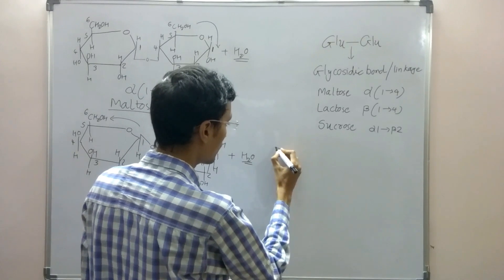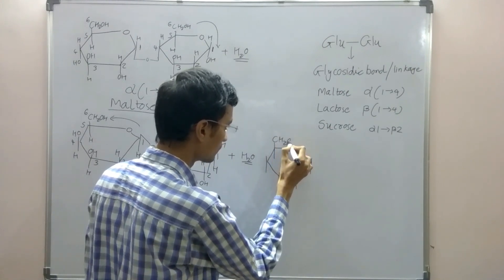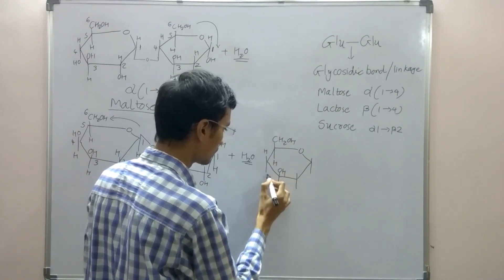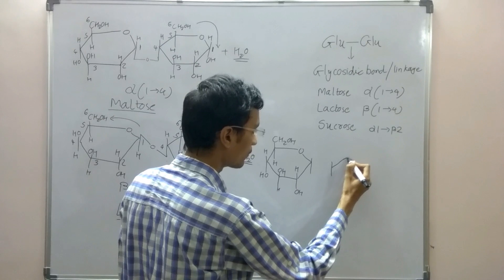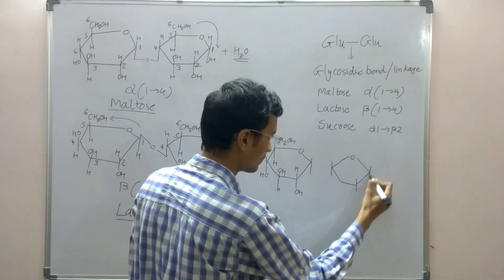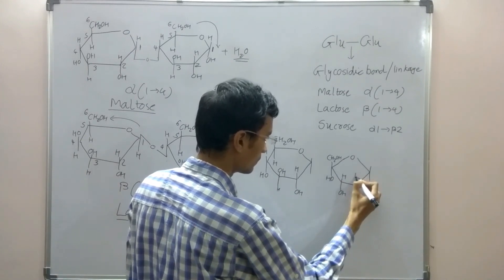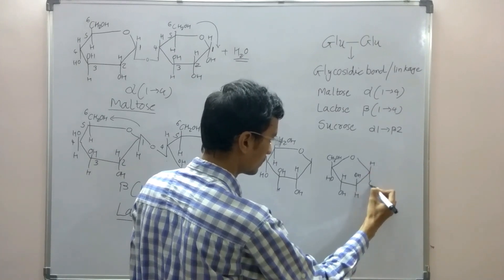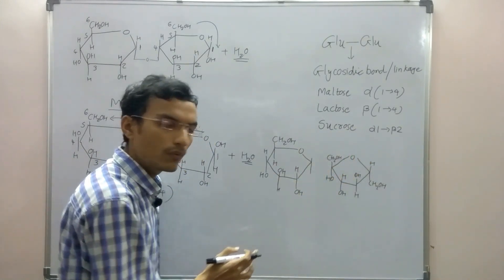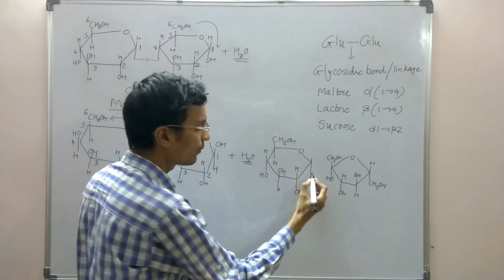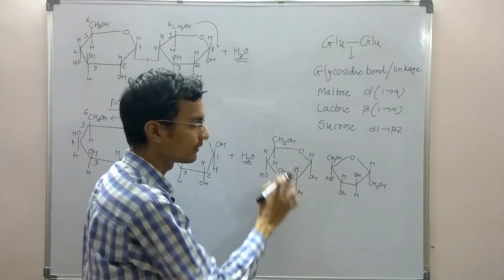Now let us look at the structure of sucrose. The first monomer is glucose and the second is fructose. Since glucose is in alpha configuration in sucrose, the position of OH is in the opposite direction to the CH2OH group — OH is downward and H is upward. This is alpha-D-glucose and beta-D-fructose.